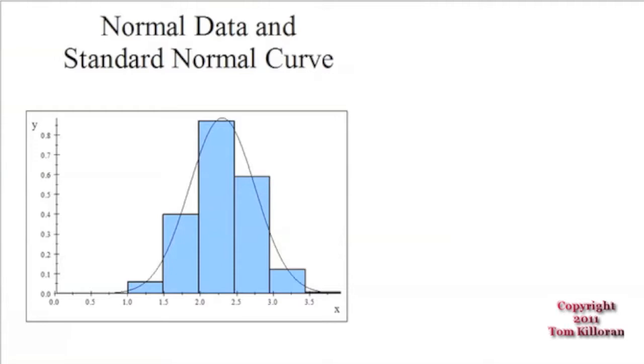then this could be the C grade. This would be people that got B's, and this would be people that got A's, and over here would be D's and F's.